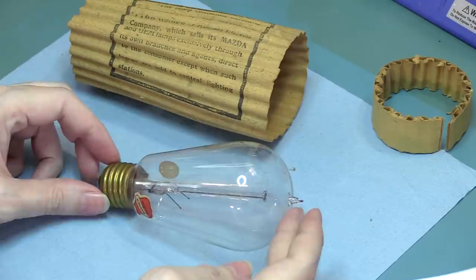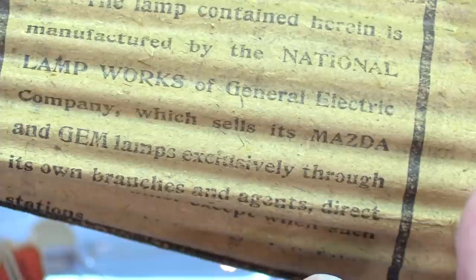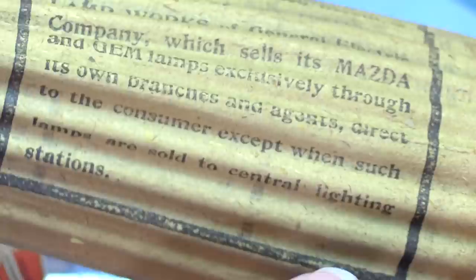All right, here we go. This is the bulb close-up. It came in the original packaging. So here's the original patent, February 1912, May 18, 1915. The lamp contained herein is manufactured by National Lamp Works of General Electric Company, which sells it under its Mazda and Gem lamps exclusively through its own branches and agents.